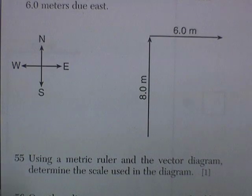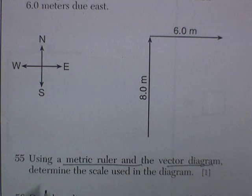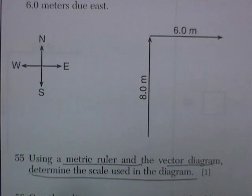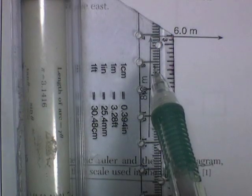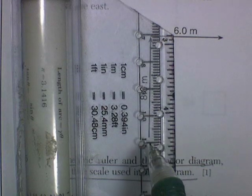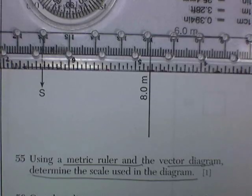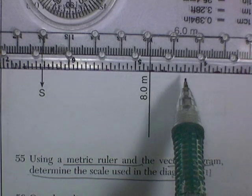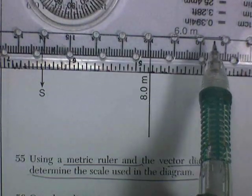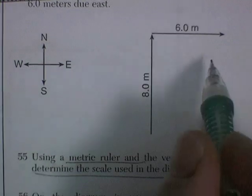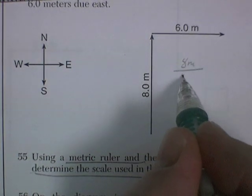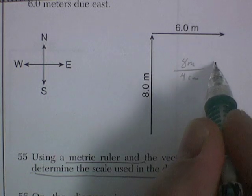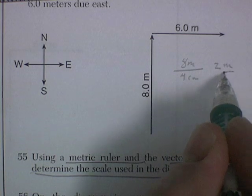Question 55, using a metric ruler and this vector diagram, determine the scale used in the diagram. They say 8 meters and 6 meters, so let's figure this out. Well, my 8-meter line looks like 1, 2, 3, 4 centimeters. And my 6-meter line looks like 1, 2, 3 centimeters. So I'm going to say it's 8 meters divided by 4 centimeters, or 2 meters per centimeter.